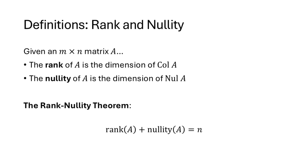When we apply the idea of dimension to the column space or null space of a matrix, we use the words rank and nullity. The rank of a matrix is the dimension of its column space, and the nullity of a matrix is the dimension of its null space. We have a theorem called the rank-nullity theorem stating that the rank of A plus the nullity of A equals n, where n is the number of columns of A.